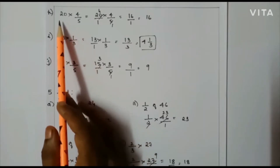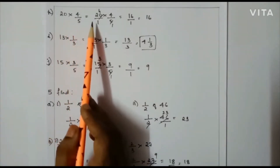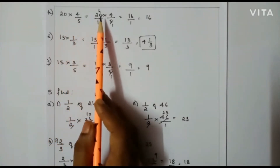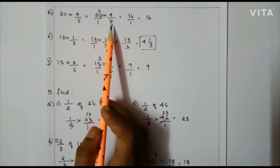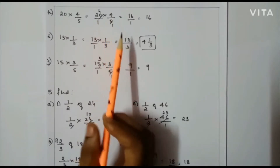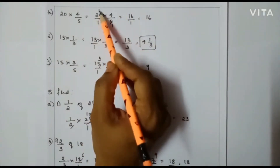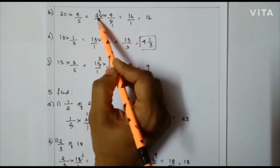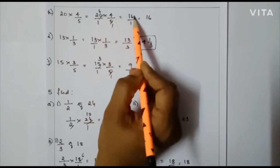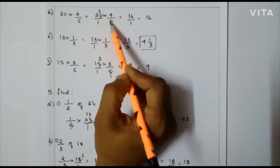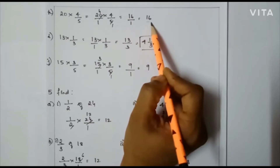Next: 20 × 4/5, that is 20/1 × 4/5. Here I can cancel: 5 divides into 20 giving 1 and 4. Then 4 × 4 = 16, and 1 × 1 = 1. So finally 16 is the answer.